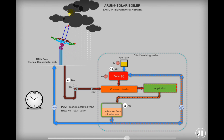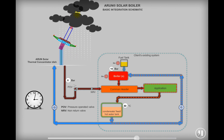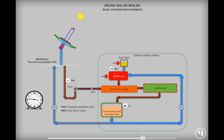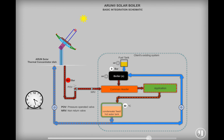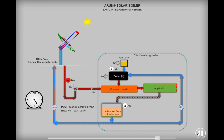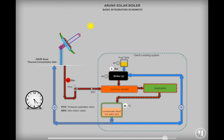When the Sun is not available, the existing conventional boiler will turn on. This switchover between the solar and existing system is automatic. Once the Sun is available again, the pressure in the line will start increasing and the Arun solar boiler will start delivering steam to the boiler header. Until sunset, and then the Arun boiler will automatically return to its parking position.